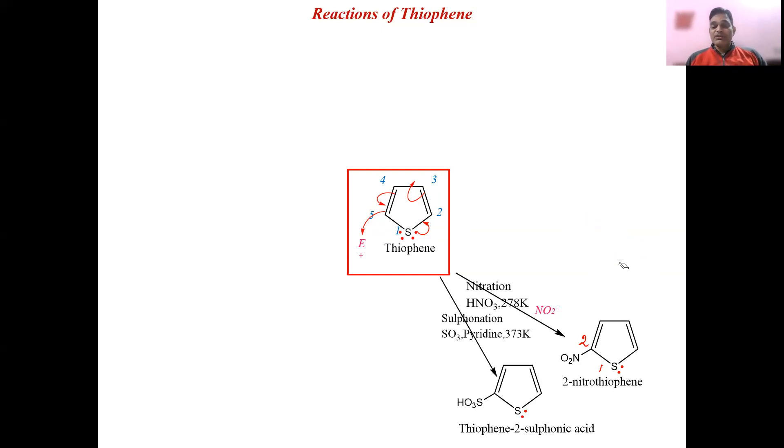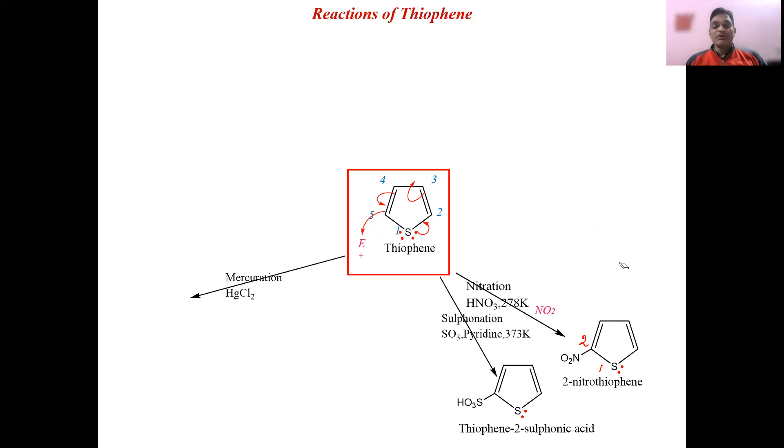Next is sulfonation. The SO3H group gets attached at C2 or C5 position, and the product formed is thiophene-2-sulfonic acid.